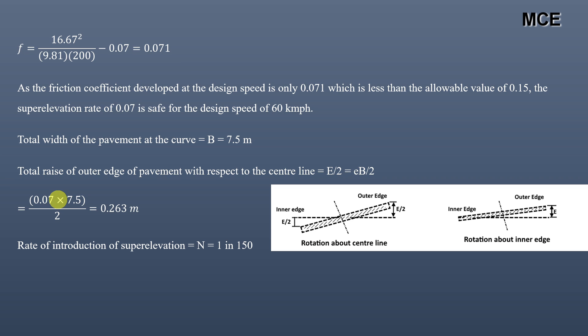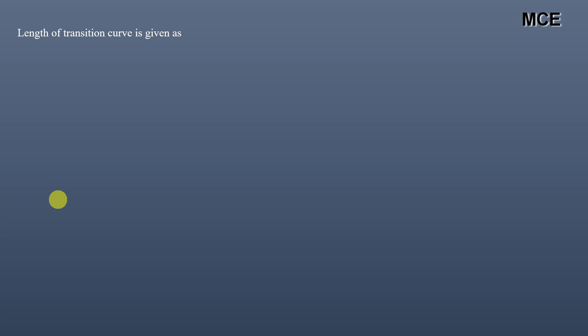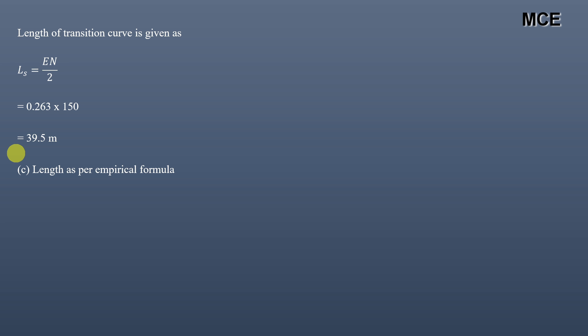The rate of introduction of super elevation is given as 1 in 150. The length of the transition curve based on the allowable rate of change of super elevation is L = (e × B / 2) × N, where the total raise is 0.263 m and N = 150. This gives L₂ = 0.263 × 150 = 39.5 meters.